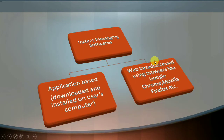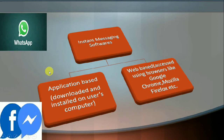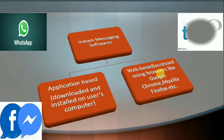There are two types of instant messaging softwares: one is application-based and one is web-based. Application-based, as the name suggests, means you are working on a particular software that is downloaded and installed on the user's computer. Web-based softwares are those which you can access through your web browser, such as Google Chrome or Mozilla Firefox.